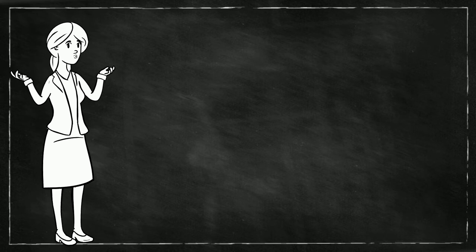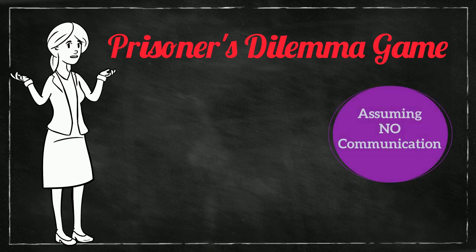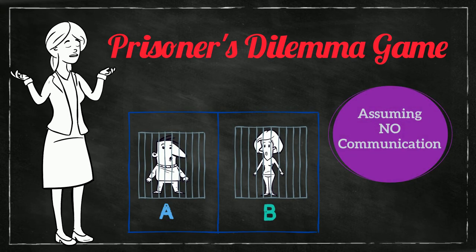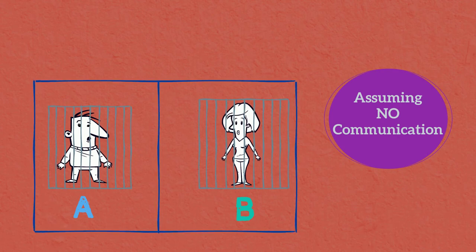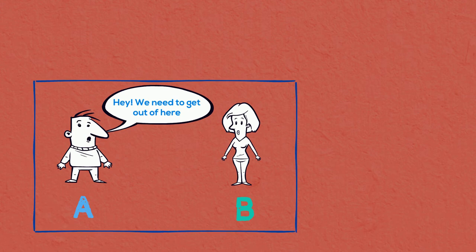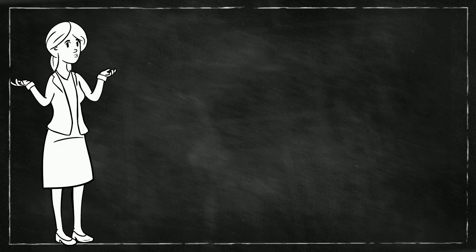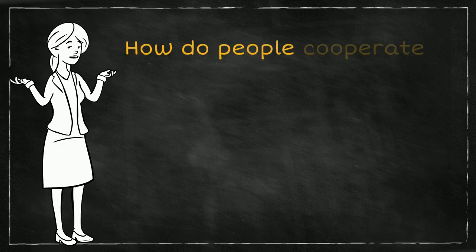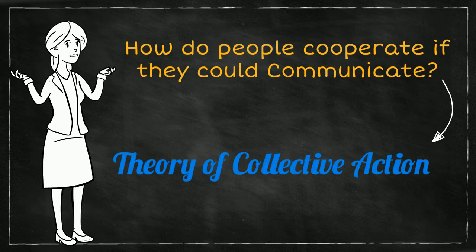It is important to remind ourselves that the prisoner's dilemma game assumes there is no communication between the players. The prisoners were kept in separate cells, so there is no way they could talk to each other. But imagine what could happen if they could communicate — naturally, they would choose to cooperate and stay silent in order to get the minimum punishment for both of them. This situation, where participants of the game can communicate with each other, is described using the theory of collective action.